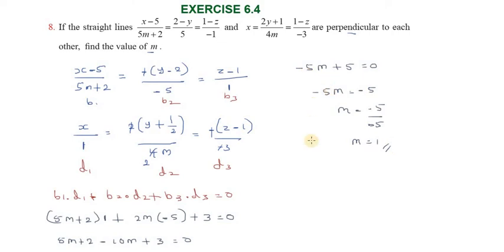Thanks students. The value of m is 1. The question line was rearranged into standard Cartesian form to identify the direction ratios. Then the perpendicularity condition b1·d1 plus b2·d2 plus b3·d3 equals zero was applied to find the answer.